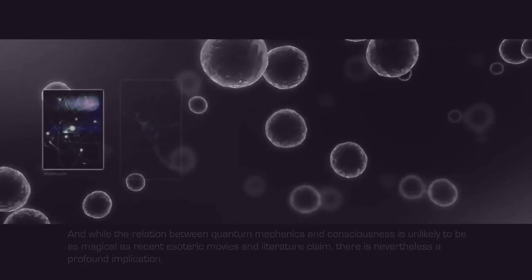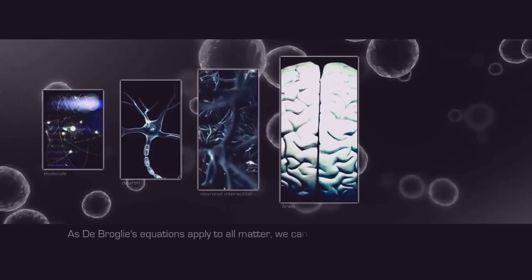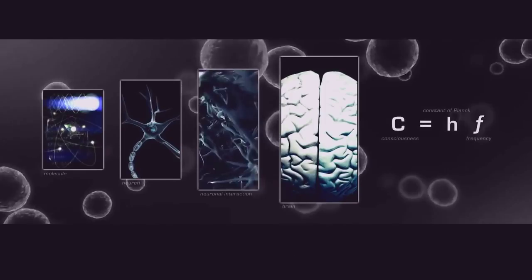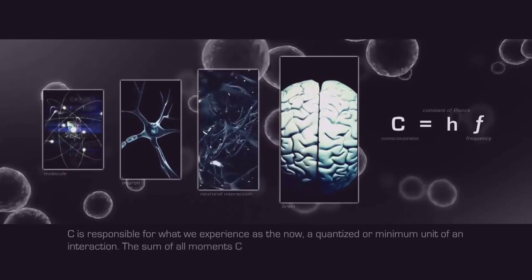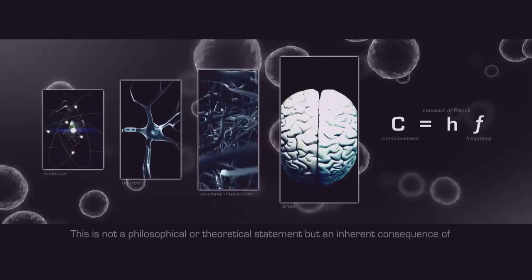As De Broglie's equations apply to all matter, we can fundamentally establish that C equals HF, where C stands for consciousness, H for the constant of Planck, and F for frequency. C is responsible for what we experience as the now, a quantized or minimum unit of an interaction. The sum of all moments C up till the current moment is what shapes our concept of life. This is not a philosophical or theoretical statement, but an inherent consequence of all matter and energy being quantized. The formula shows how life and death are abstract constructions of C.